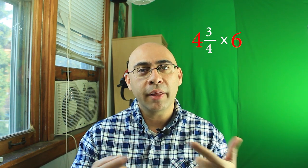For example, when you have something like four and three-fourths times six, people tend to just multiply the numbers together and then ignore that fraction. But remember four and three-fourths is short for four plus three-fourths and then you multiply that times the six.